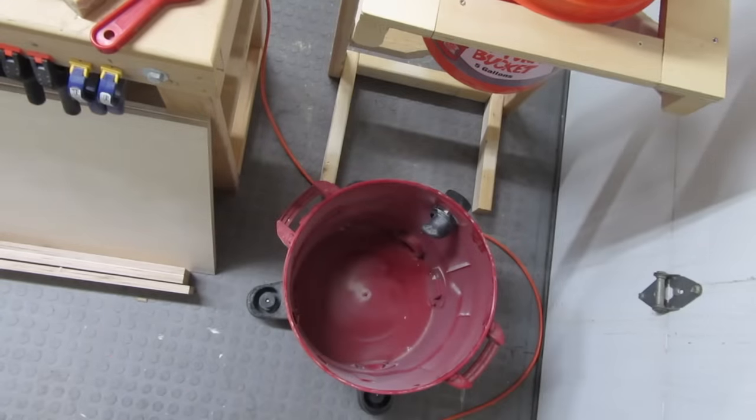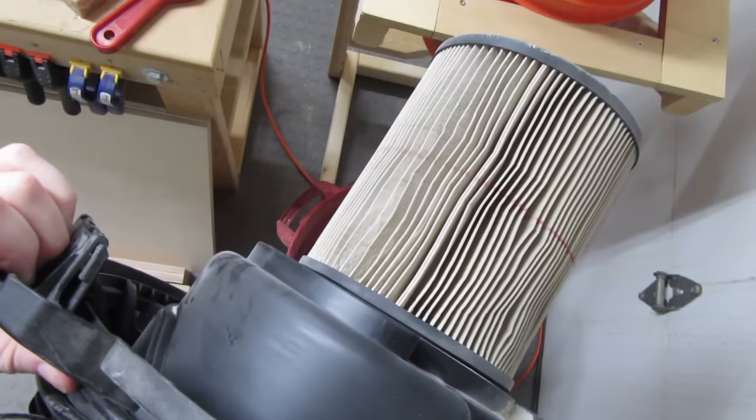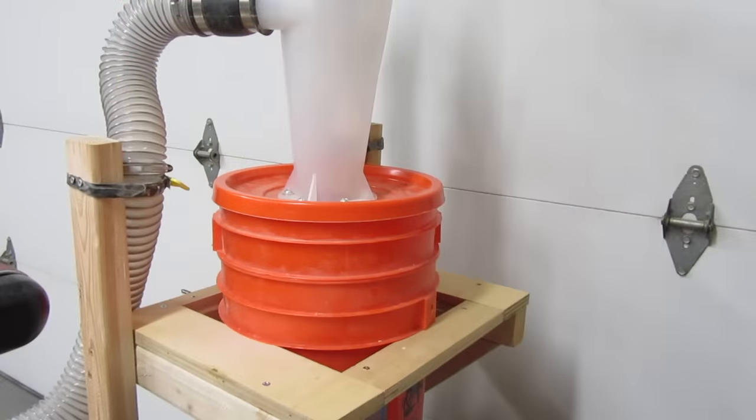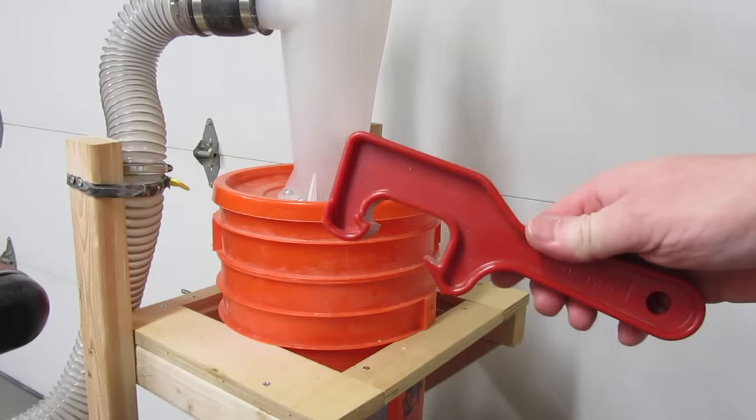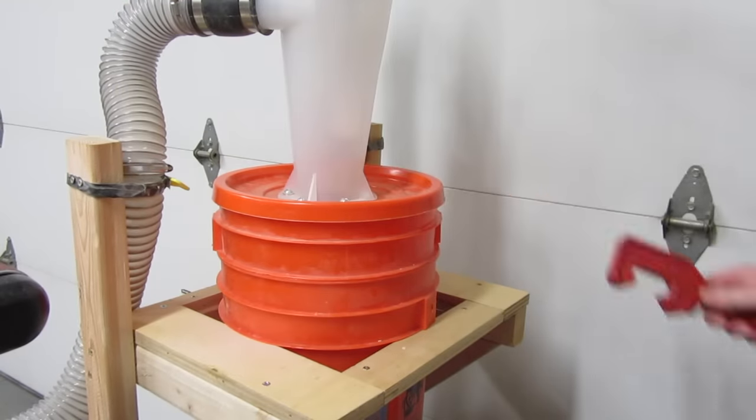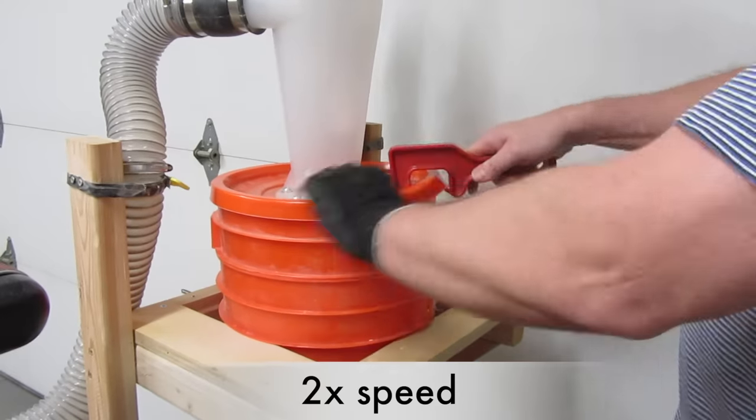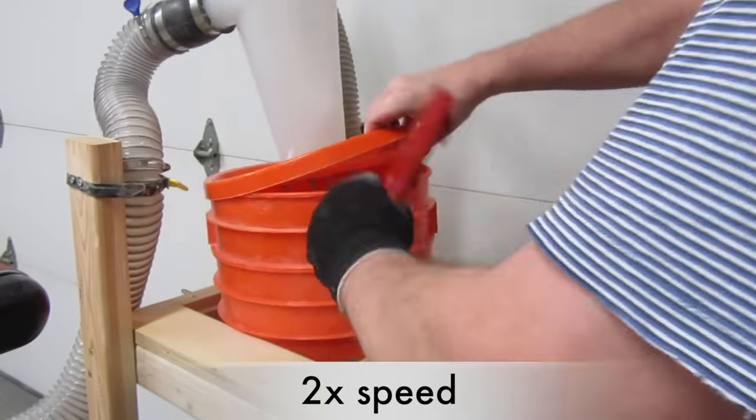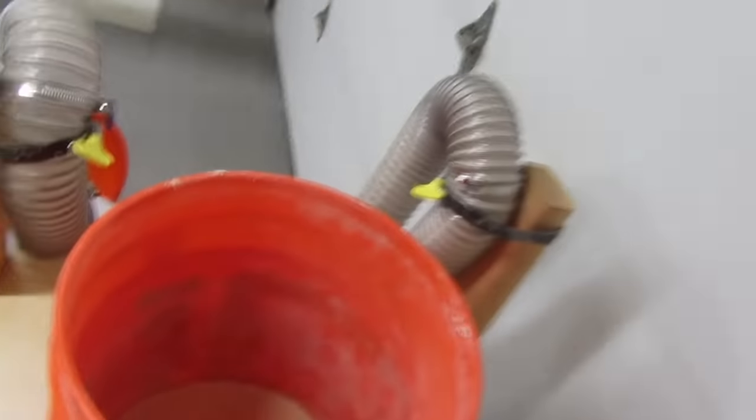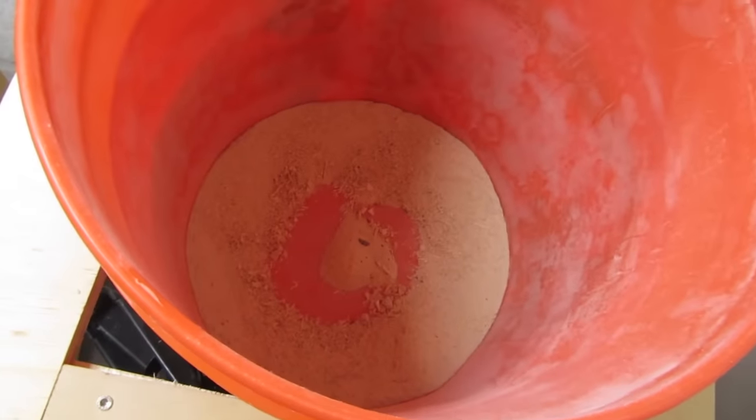Looking inside my shop vac, you can see it's still empty, and of course the filter's clean. In order to look in the bucket, I have to remove the lid. I got this cool tool from Amazon that makes it pretty easy to take the lid off. I recommend it. As you can see, this is where the dust ended up.